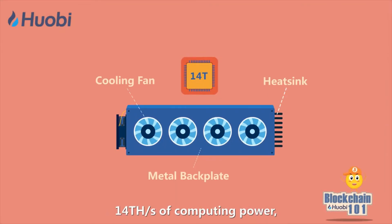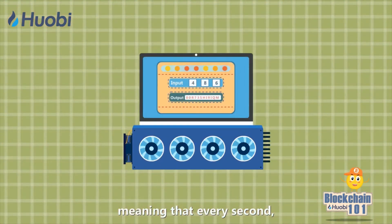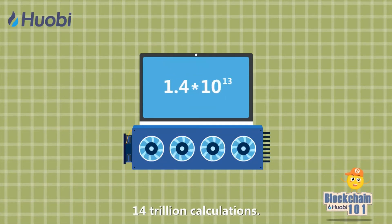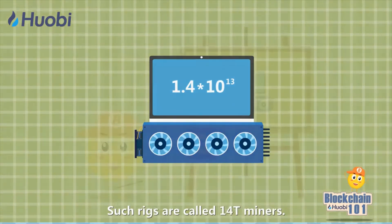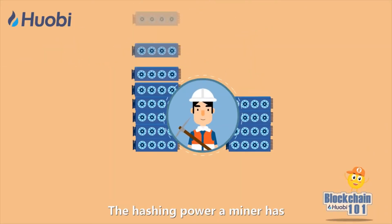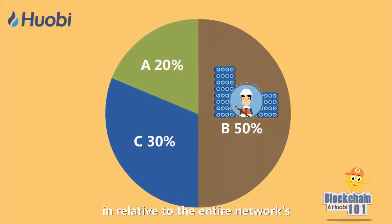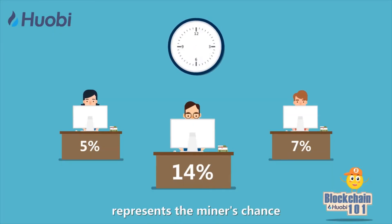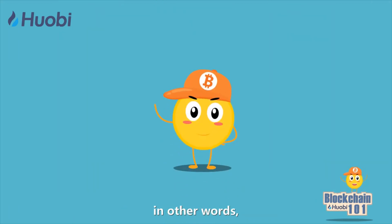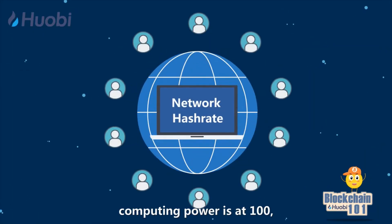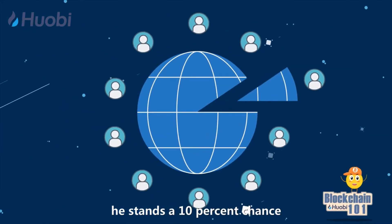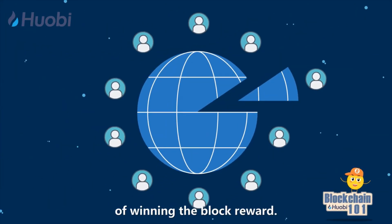Currently, mainstream mining rigs come with 14 TH per second of computing power, meaning that every second each rig can perform at least 14 trillion calculations. Such rigs are called 14T miners. The hashing power a miner has relative to the entire network's computing power represents the miner's chance of winning the block reward every 10 minutes. For example, if the Bitcoin network's computing power is at 100 and one miner's power is at 10, he stands a 10% chance of winning the block reward.